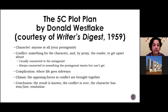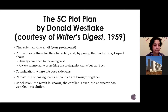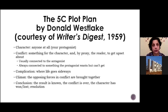He called it the Five C Plot Plan. The five C's are: character, conflict, complication, climax, and conclusion. The character is anyone at all — basically your protagonist. Your conflict is something for the character, and by proxy the reader, to get upset about — it's usually connected to the antagonist and always connected to something the protagonist wants but can't get. Complication is where the protagonist's life goes sideways. The climax is where the opposing forces in the conflict are brought together. And the conclusion is where the result is known, the conflict has ended, and the character has either won or lost — basically the resolution of the story.